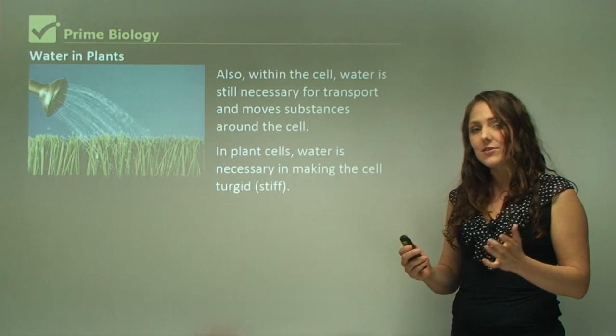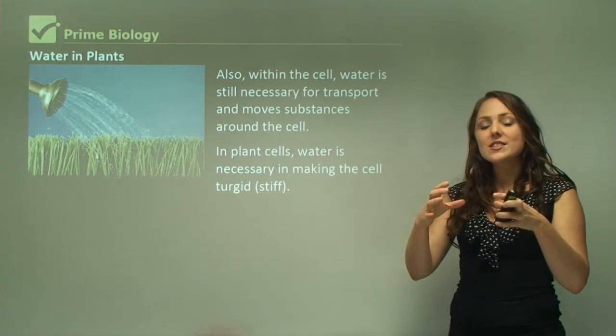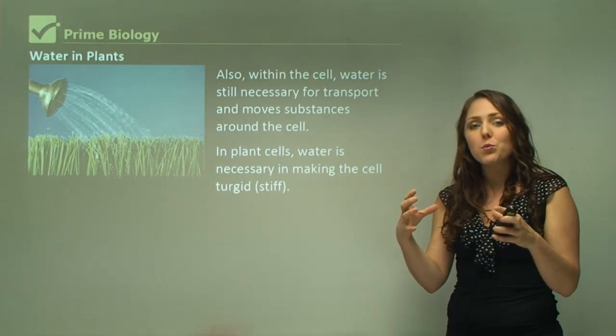In plant cells, water is necessary in making the cell turgid, which means stiff. What this actually means is that the cell is at its full capacity and filled with water.